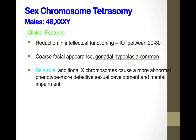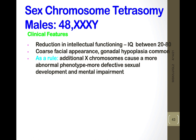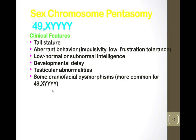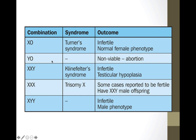47,XYY males are tall, fertile, may suffer severe acne during adolescence, and have more problems with education and behavior. Sex chromosome tetrasomies: males with XXXY have reduced intellectual functioning with IQ between 20 to 80, coarse facial appearance, and gonadal hypoplasia. As a rule, additional X chromosomes cause more abnormal phenotype, more defective sexual development, and greater mental impairment. 49,XXXYY shows facial dysmorphism, testicular abnormality, developmental delay, and low intelligence.